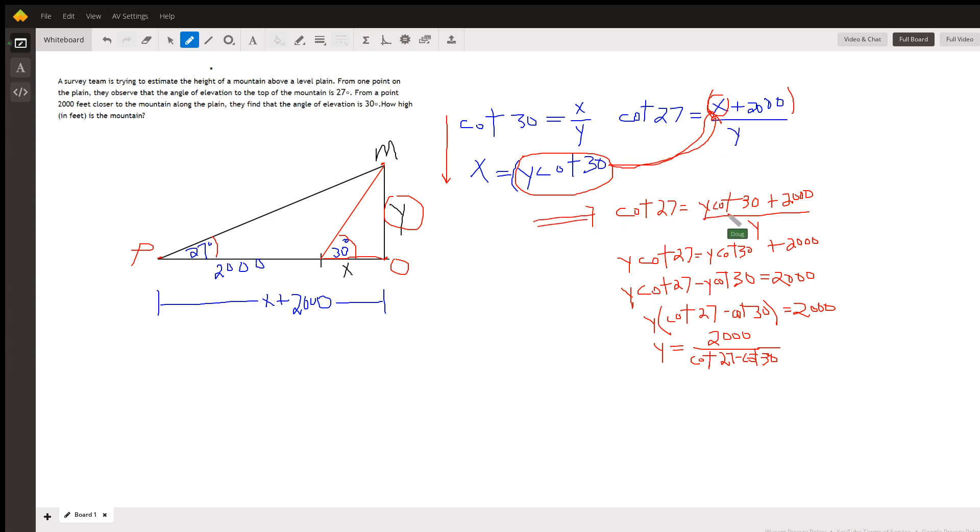Cotangent of 27 equals y cotangent of 30 - which replaces the x - plus 2000, all over y. How do I solve for y? Multiply both sides by y to eliminate the fraction.